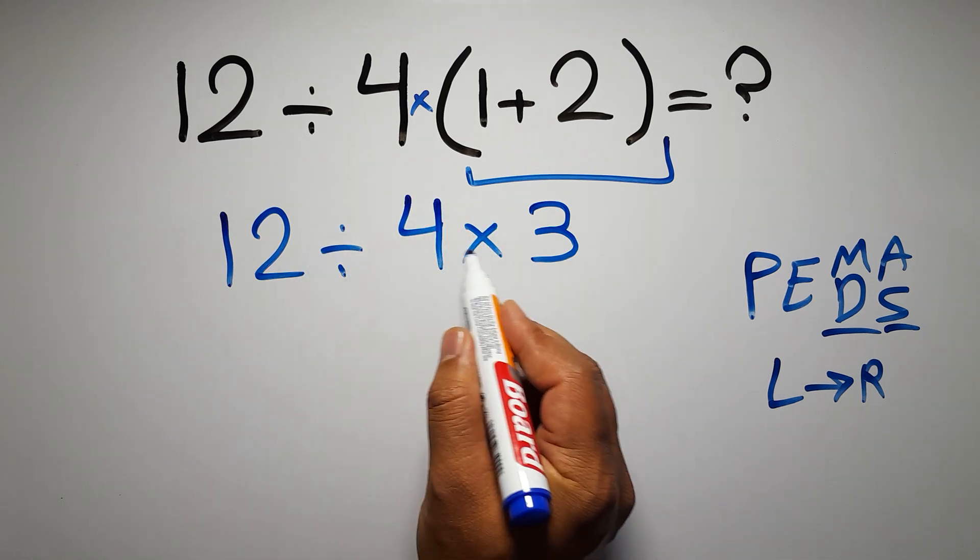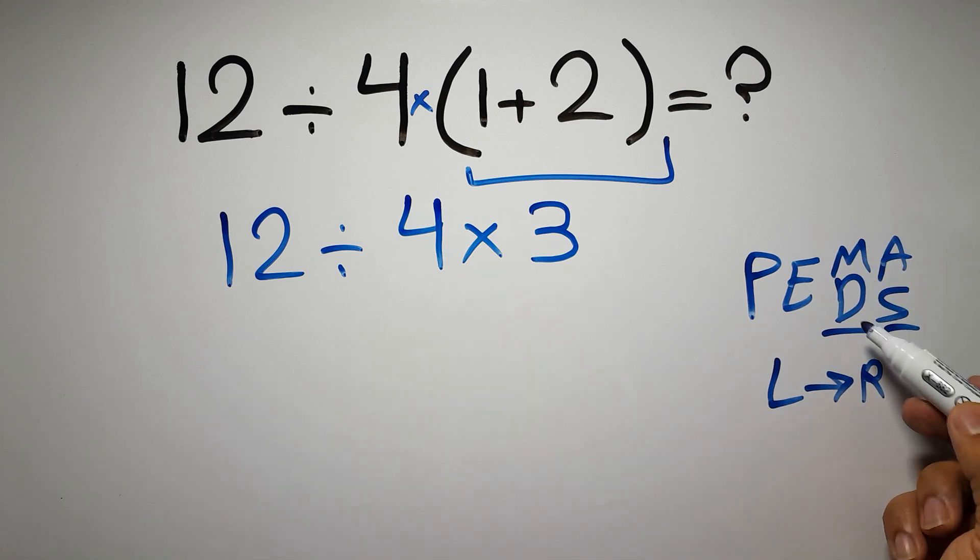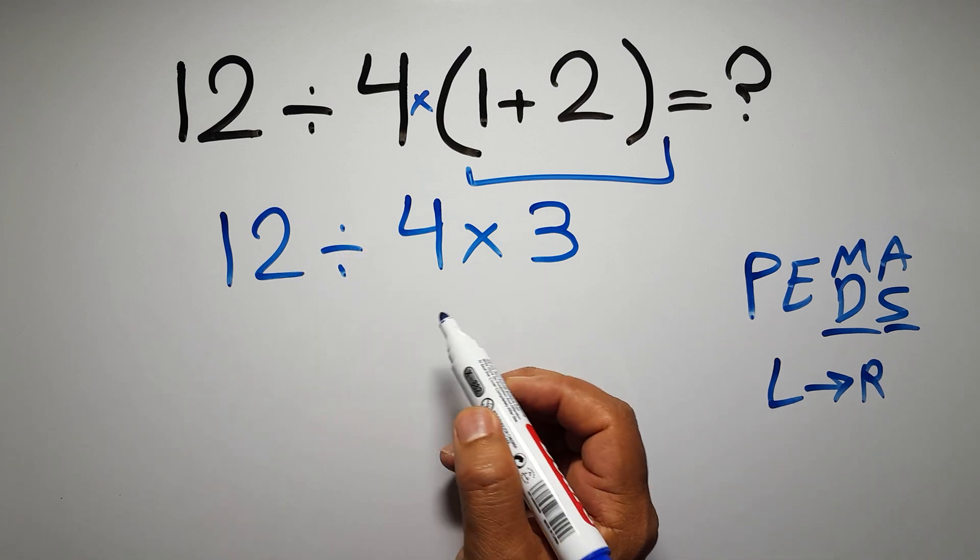Now, we have one division and one multiplication. As I said, multiplication and division have equal priority, and we have to work from left to right. So, here first we have to do this division, then this multiplication.